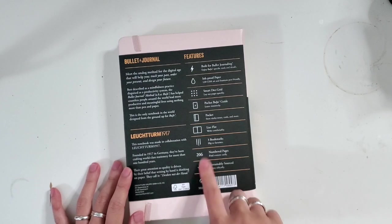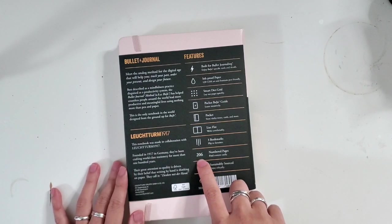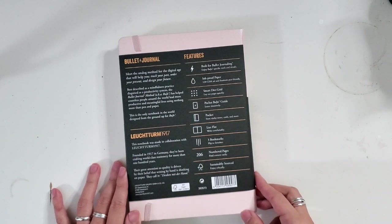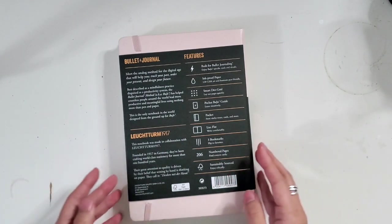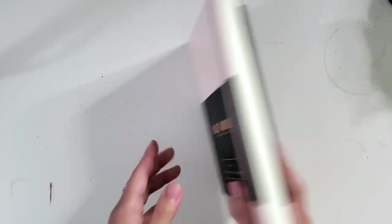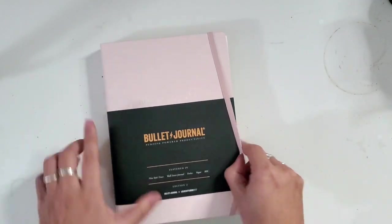There's three bookmarks instead of two. There's 206 pages. I think that's a little bit less than there might have been before. And then I love that they added the sustainably sourced. I have to look more into what that means, but love that they added it.